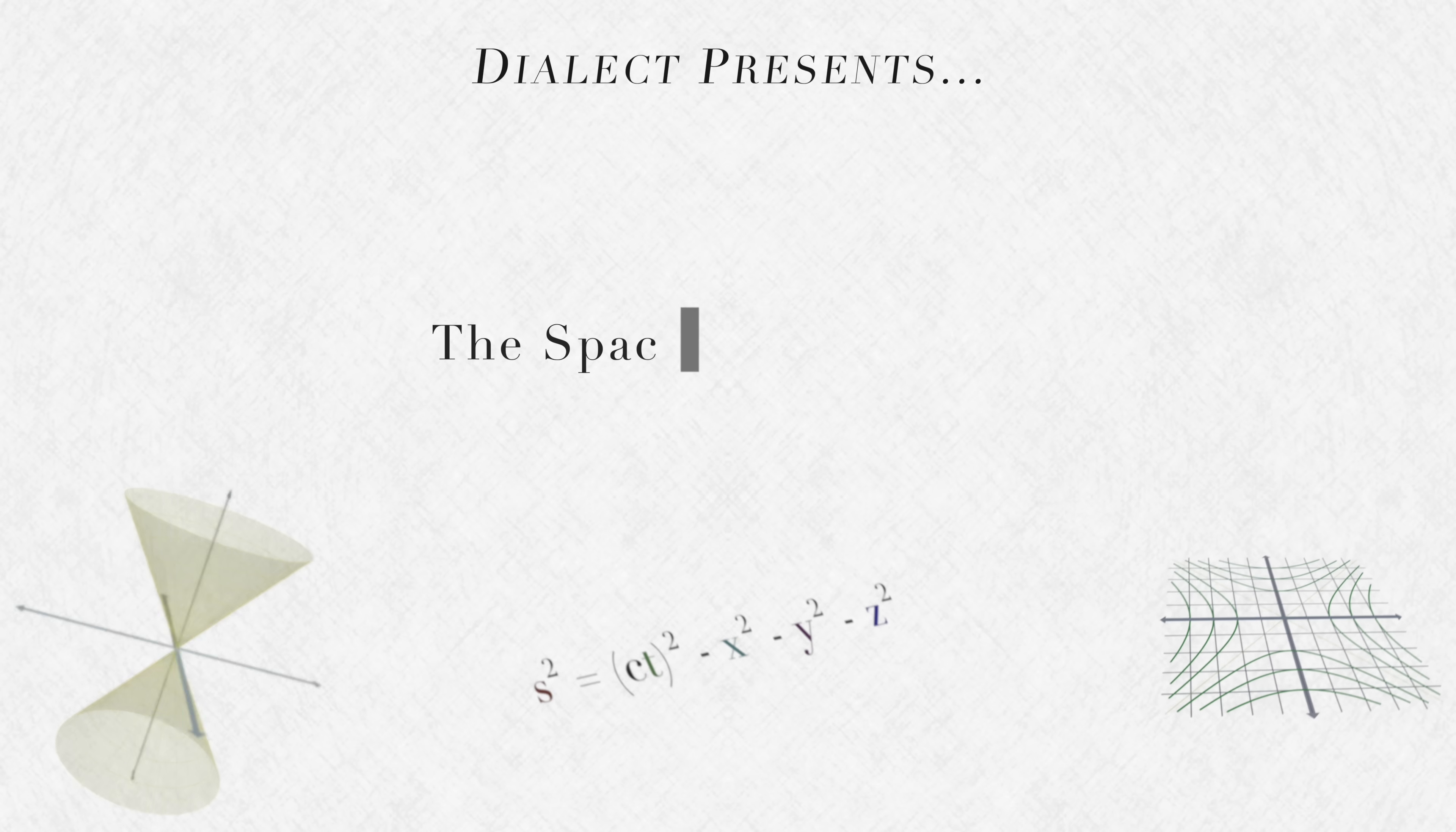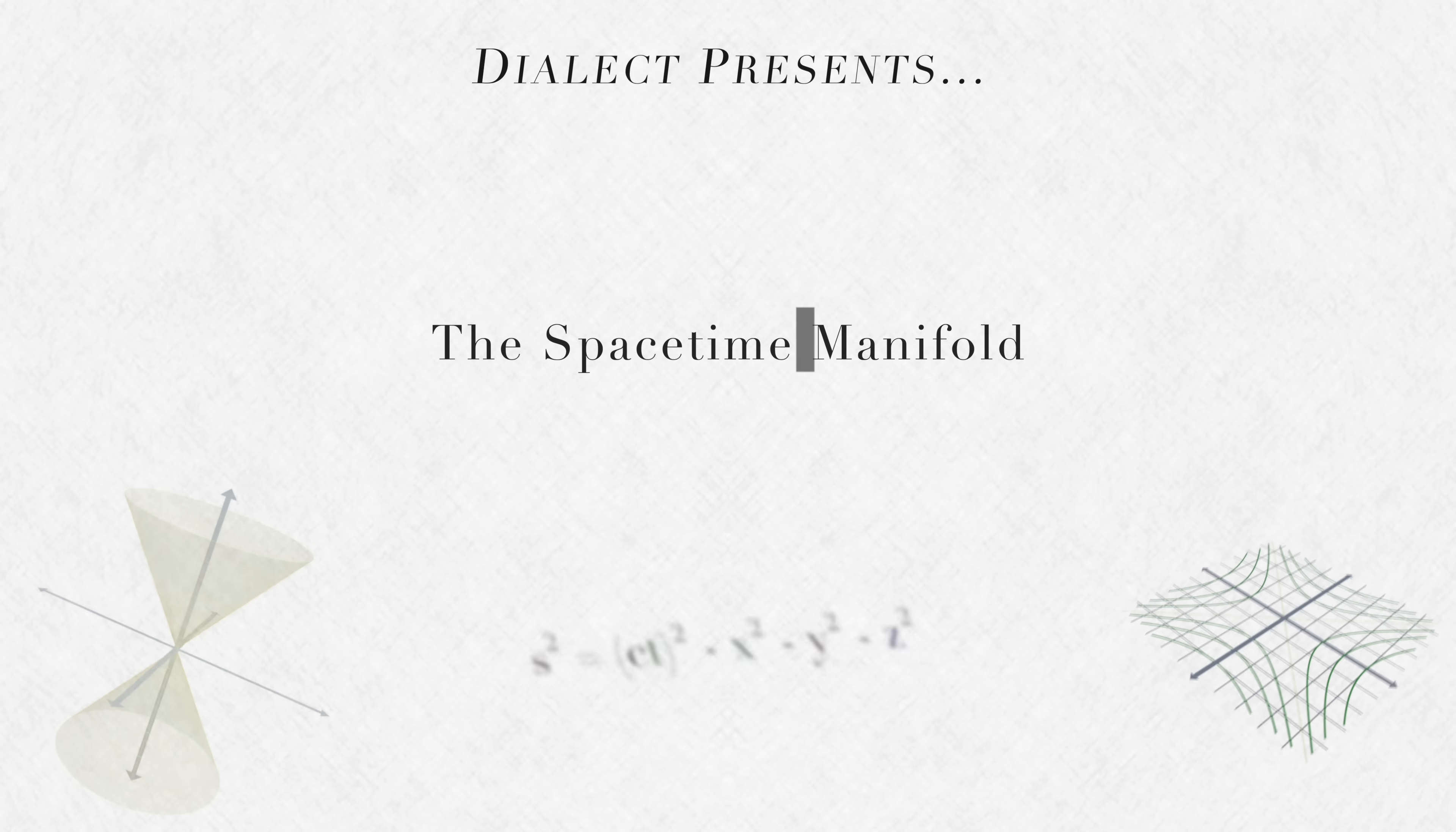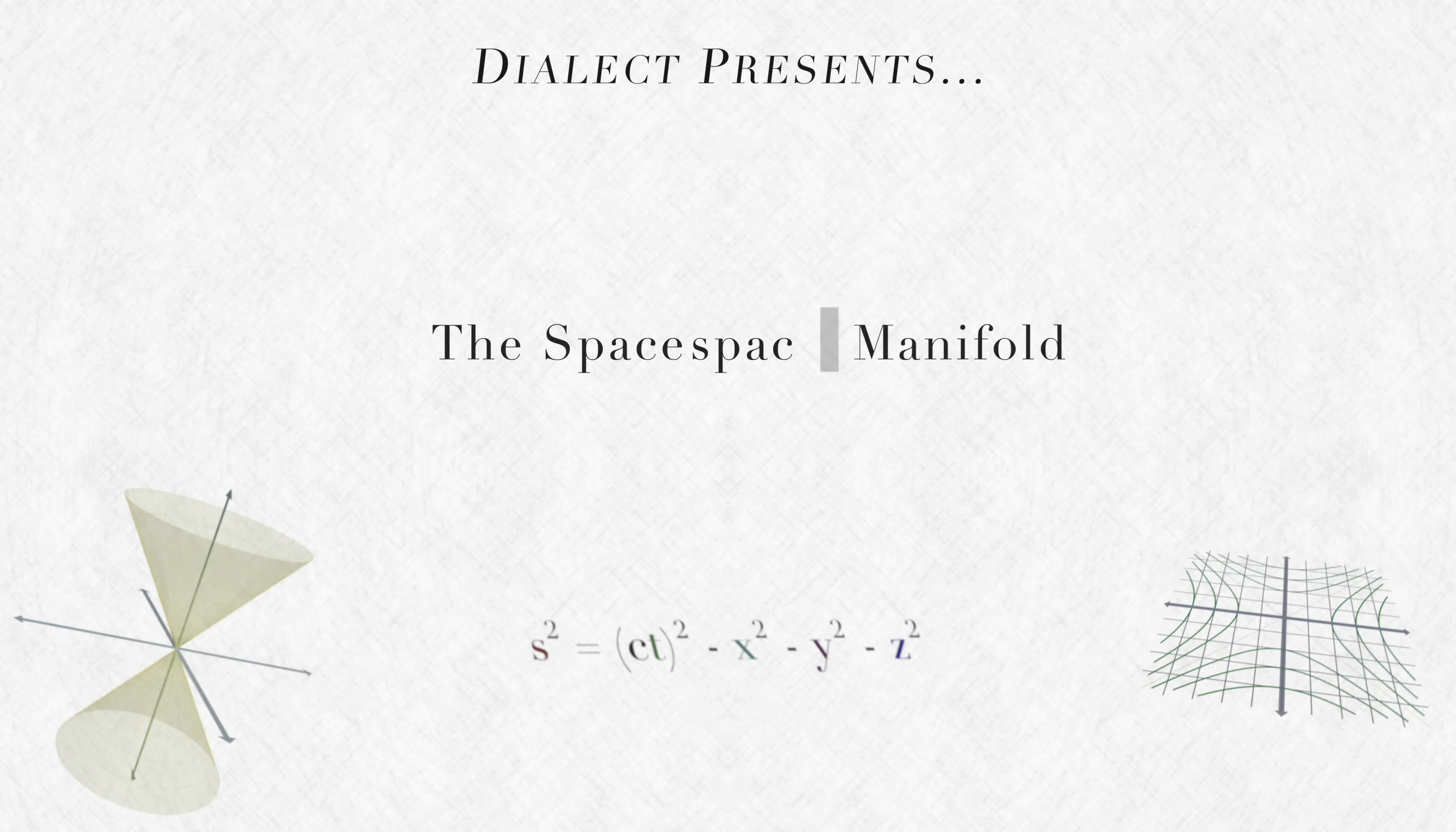That's right, in relativity, your space-time manifold isn't a four-dimensional space-time manifold at all, it's actually a four-dimensional space-space manifold.